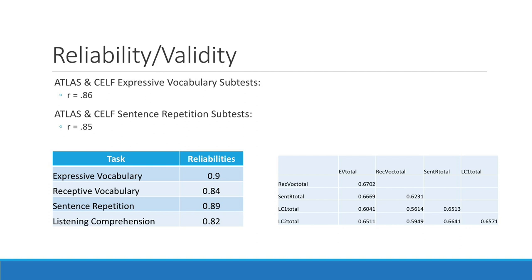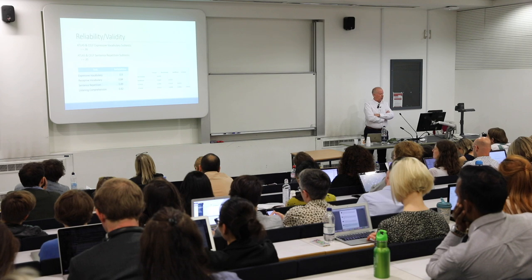We've done some basic psychometrics on the measure. For this sample of 300-odd children, we co-administered the app with the KELF expressive vocabulary test and the KELF sentence repetition subtest. The correlations are 0.86 between the ATLAS expressive vocabulary measure and the KELF expressive vocabulary measure, and 0.85 between the ATLAS sentence repetition measure and the KELF sentence repetition measure.